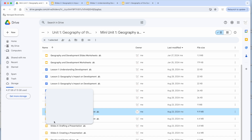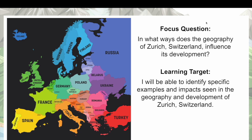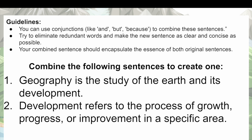Lesson three focuses on Zurich, Switzerland. We look at the same unit question, and I show students where Switzerland is on the map — it's landlocked, though I won't go into that detail right there. The focus question is: in what ways does the geography of Zurich, Switzerland, influence its development? For this lesson, I changed the entry activity — I didn't want it to get boring, and by lesson three we've already covered the two main vocabulary words. So I switched to a sentence-combining activity, which my students often love.